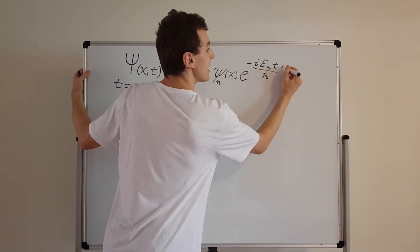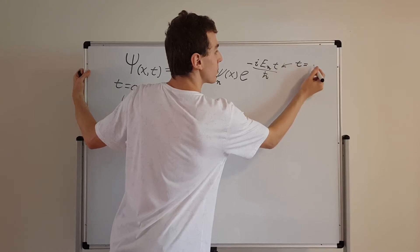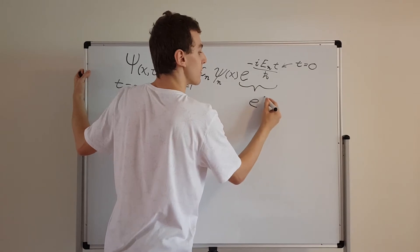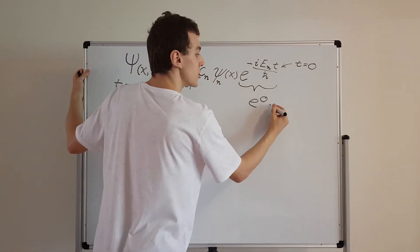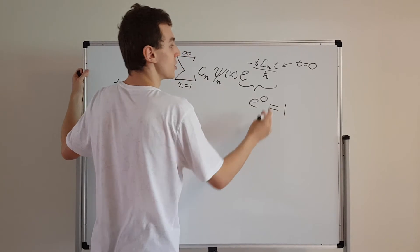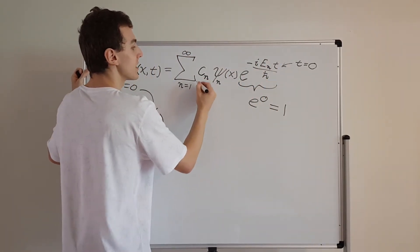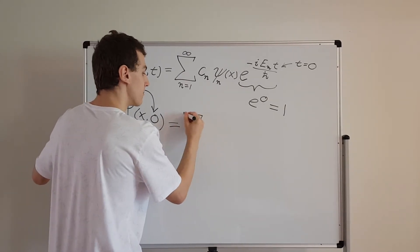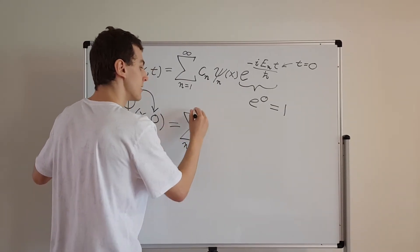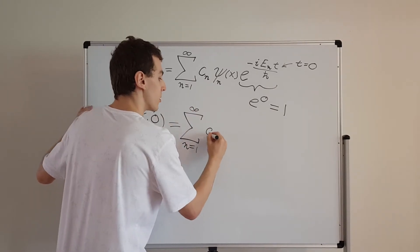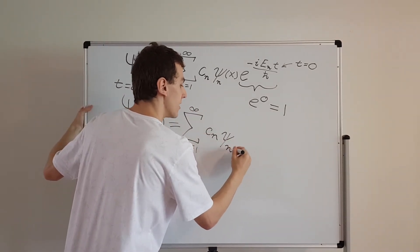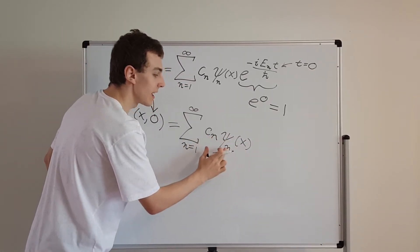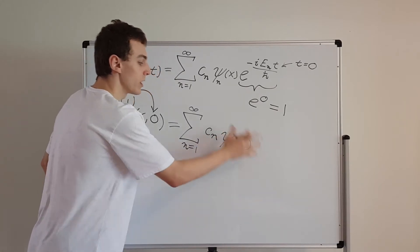If we set t equals 0, the exponential factor e to the minus i·En·t over h-bar becomes e to the power of 0, which is just 1. So that factor simply disappears and we're left with the sum from n equals 1 to infinity of cn times ψn(x) — essentially a linear combination of the ψn's.